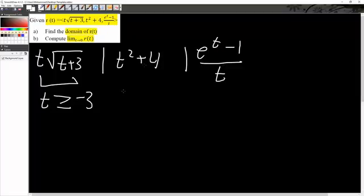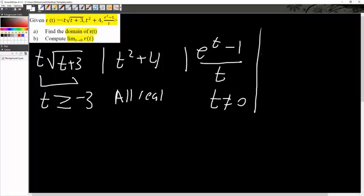t squared plus 4 is all real. Any number for t would work. And then e to the t minus 1 divided by t, t cannot equal 0, so simply t does not equal 0. If we have 0, it wouldn't work. So, with all that said, we can say that the domain would be...